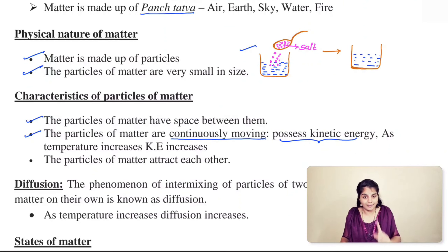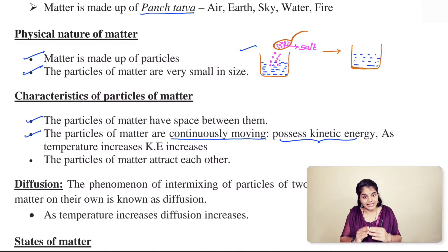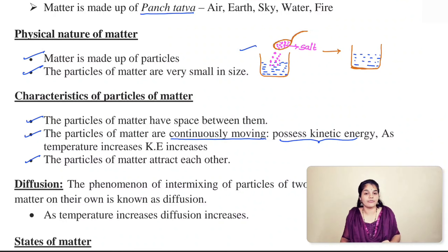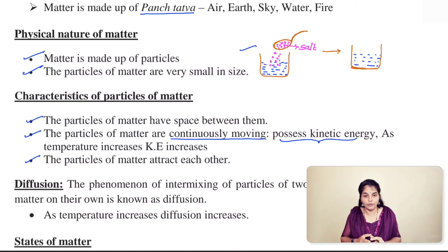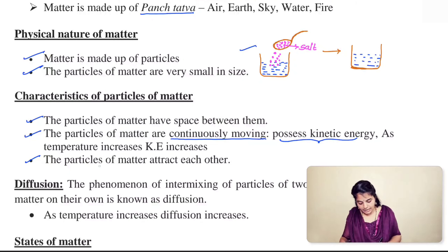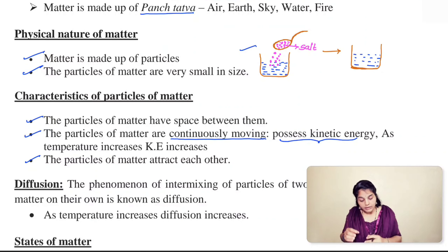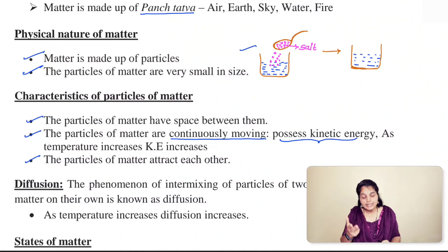Kinetic energy depends on temperature: as temperature increases, kinetic energy increases, meaning particles can move with higher speed. The third characteristic is that particles of matter attract each other. For example, if you hold your finger under a running tap, your finger cannot cut the flow of water — this is because water particles have a force attracting them together. This attraction varies from matter to matter. In summary: particles have spaces between them, particles attract one another, and particles are continuously moving, possessing kinetic energy.